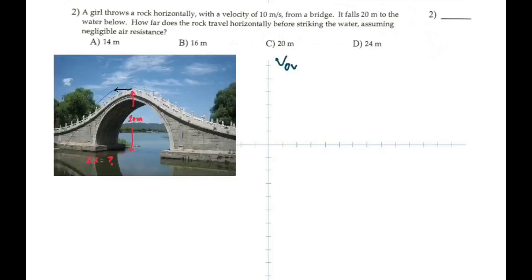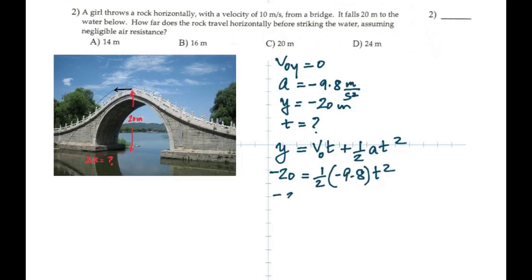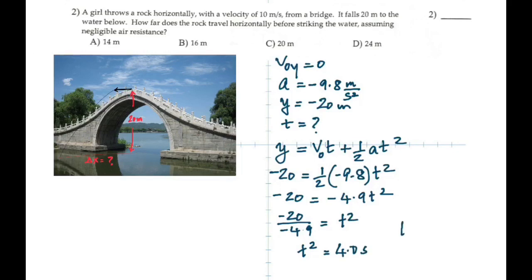If you think only about the vertical quantities: the initial vertical velocity V₀Y is zero, acceleration is −9.8 m/s², and the vertical displacement is negative 20 m because it's going down. You can find the time using the equation: Y = V₀T + ½AT². Plug in those numbers; ½ times −9.8 is −4.9. You will get the time as 2 seconds.